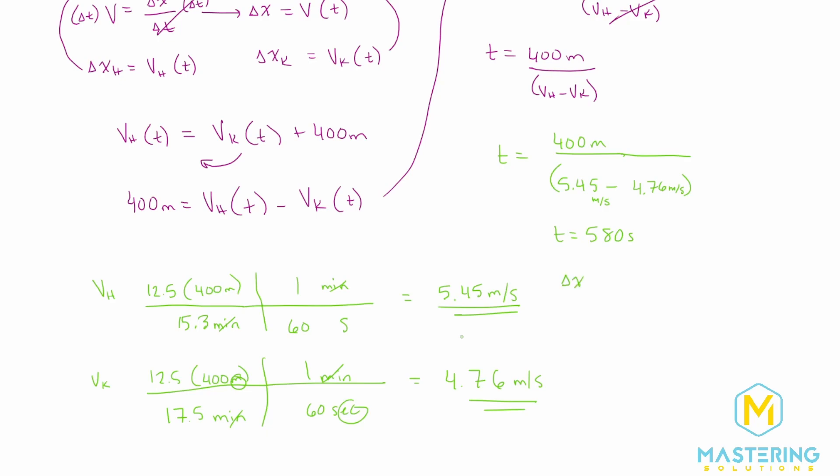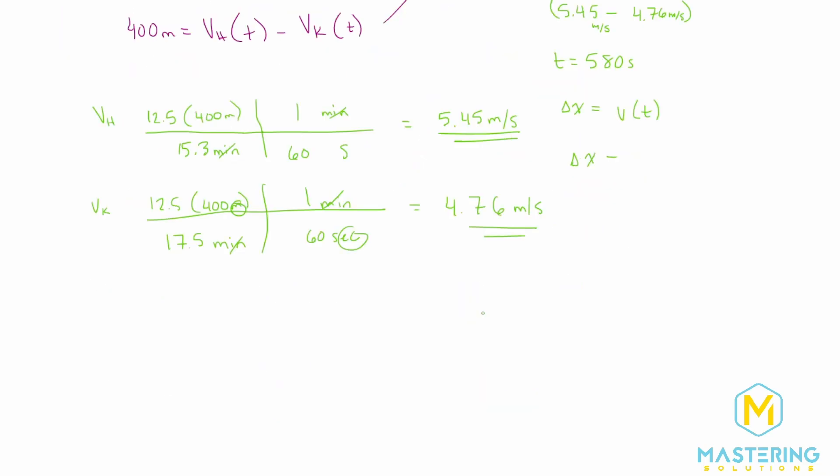And the distance, this is for how many laps has Hannah gone when she passes Kara. So we'll be using the information for Hannah. So the distance that she has run is 5.45 meters per second times her time, which is 580 seconds, the point when she laps her.